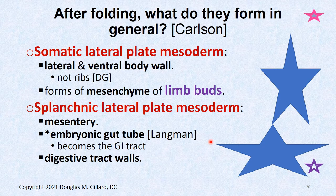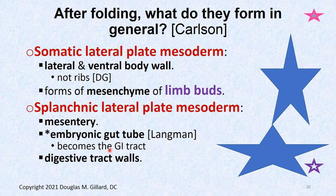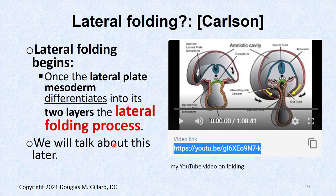After folding, what do these layers form in general? The somatic lateral plate mesoderm — the outer layer — is going to make your lateral and ventral body walls. It doesn't make the ribs, but it makes the mesenchyme of the rib buds. So in general, think 'body wall.' The splanchnic — the inner part of lateral plate mesoderm — folds and makes your very important gut tube: your esophagus, stomach, small bowel, large bowel, and rectum. It also forms mesentery and the digestive tract walls.